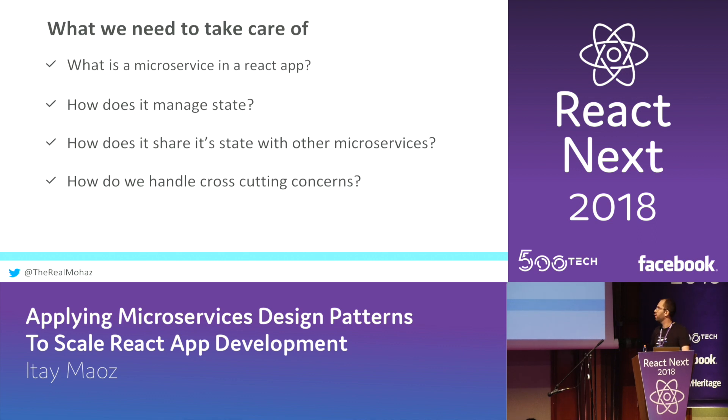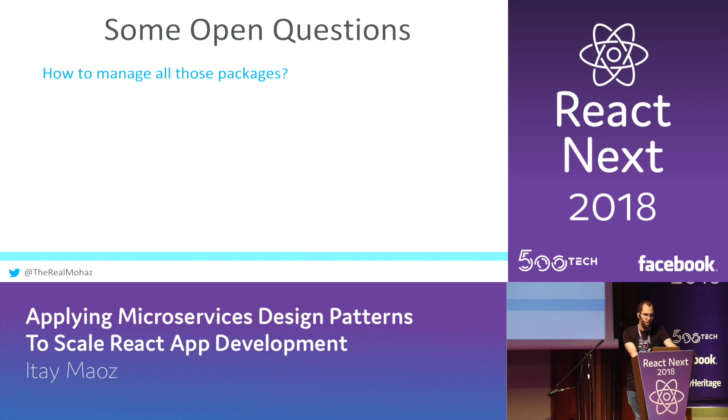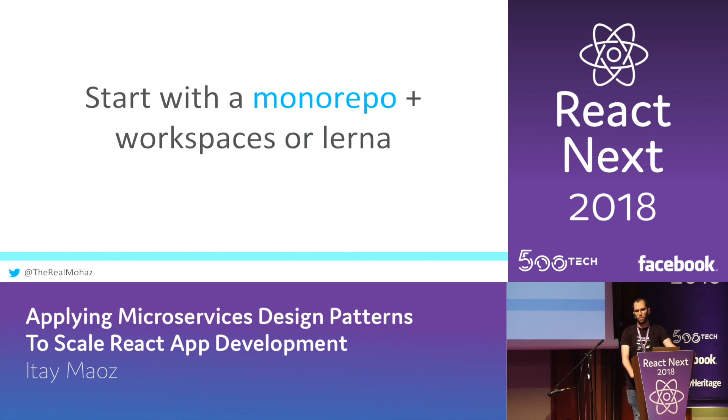We've answered all our questions, but there are still some open issues. One, we now have a lot of packages — how are we going to manage them? Starting with a monorepo containing all your packages and managing it with either Lerna or Yarn Workspaces can make your life easier. You can build everything together, control lint rules together, and you don't have to deal with versioning if you don't want to. Alternatively, you can have each package in its own repo, but you'll need to manage versioning and the build chain.